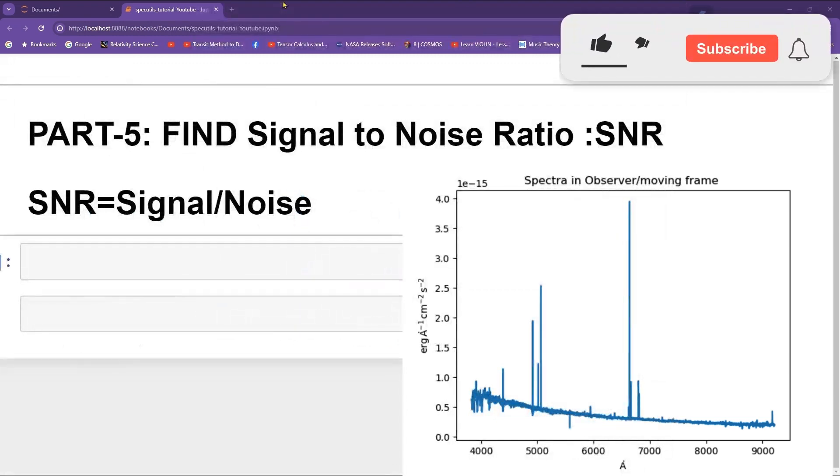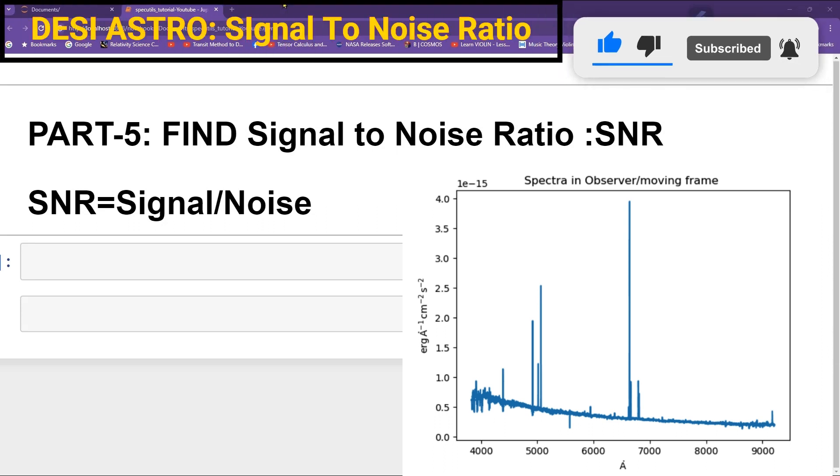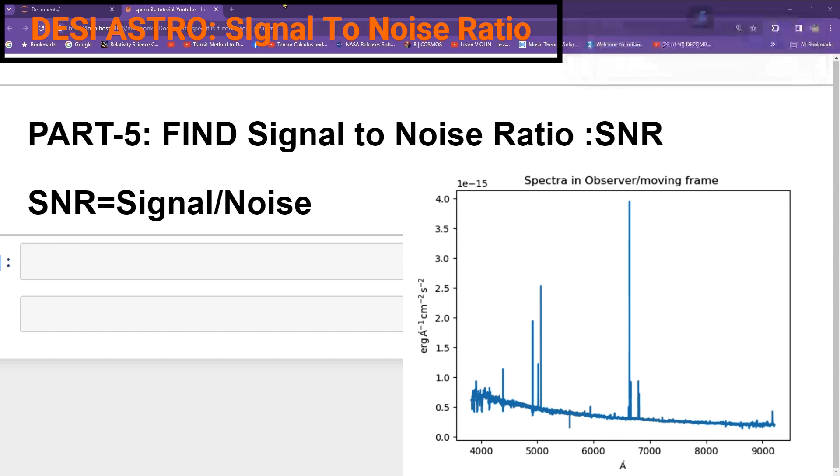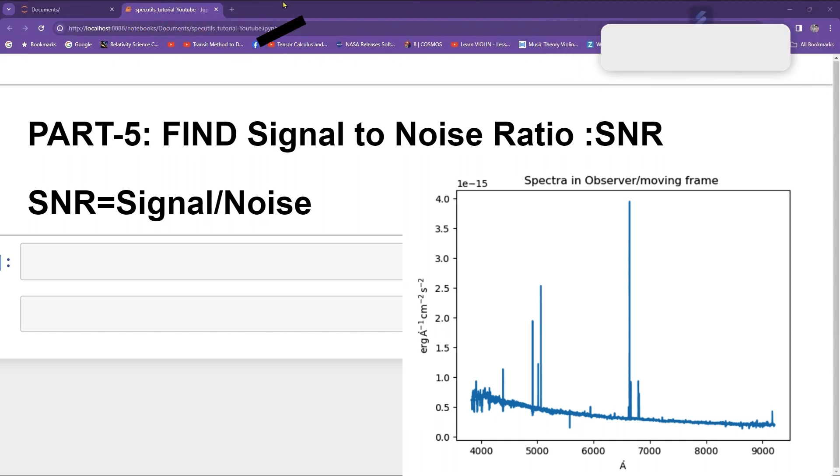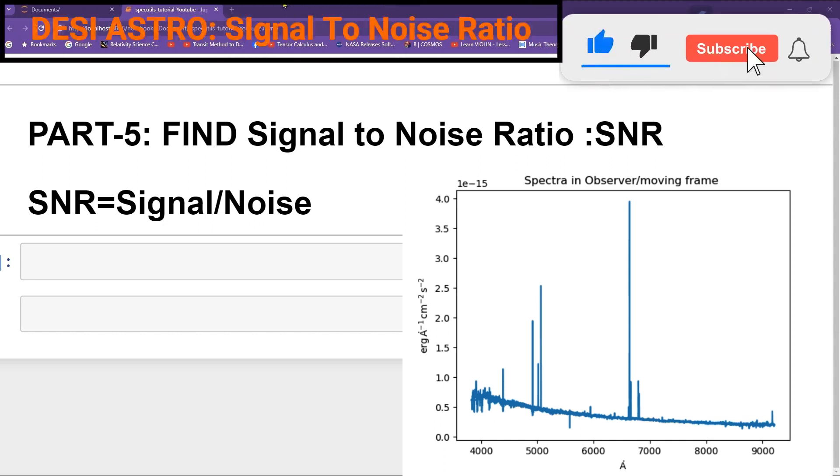In this fifth tutorial of SpecUtils, you are going to learn how to find SNR. It is called signal-to-noise ratio and basically it is defined as signal divided by noise in your spectrum of a star or galaxy or the objects. We are going to find it using SpecUtils.